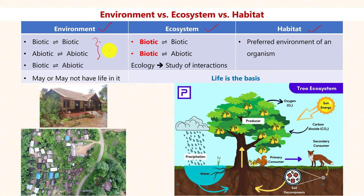Environment is a physical component in which there are various interactions between biotic components, abiotic components, or between biotic and abiotic components. The ecosystem is very similar to environment, but in the ecosystem, biotic components play the major role — the interactions are between biotic-biotic and biotic-abiotic components. Habitat is a small part of the ecosystem which is the preferred environment for an organism.